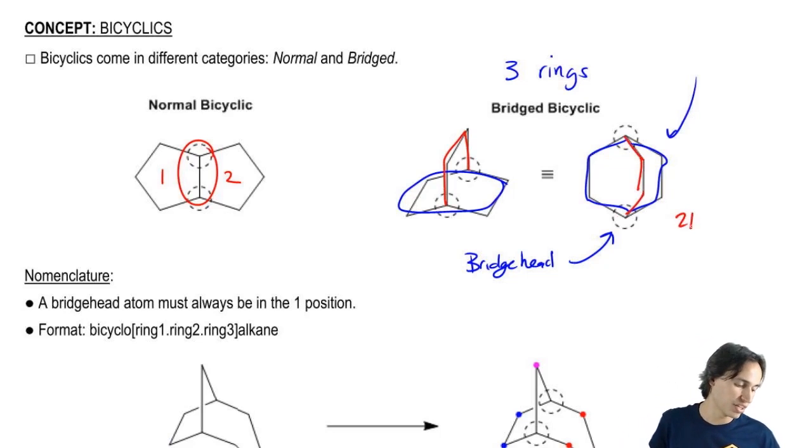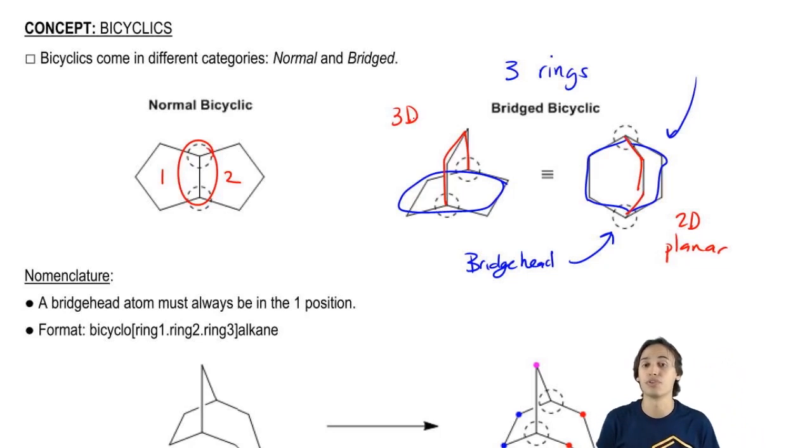So this is basically the 2D way to represent it or planar, and this would be the 3D way to represent it. But in either case, they're both the same thing. So now let's go on and figure out how to name these guys. It turns out that bicyclics, because of their added complexity of multiple rings, are going to be named completely differently as monocycloalkenes.